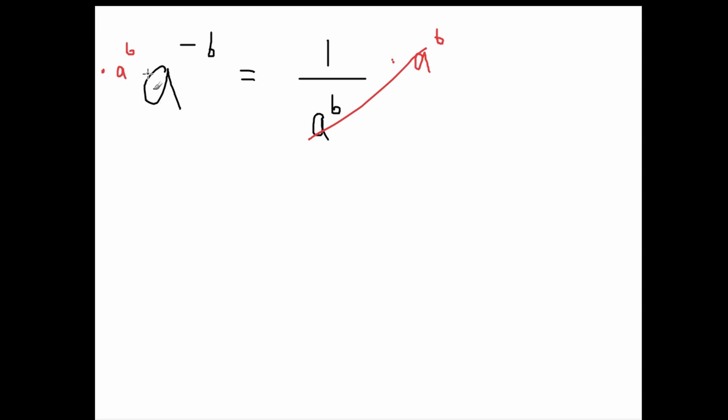If you times two expressions with the same base, you just add the exponents, right? So that will be a to the power of negative b plus b. And that will equal 1, of course, because some number divided by that very same number will equal 1.